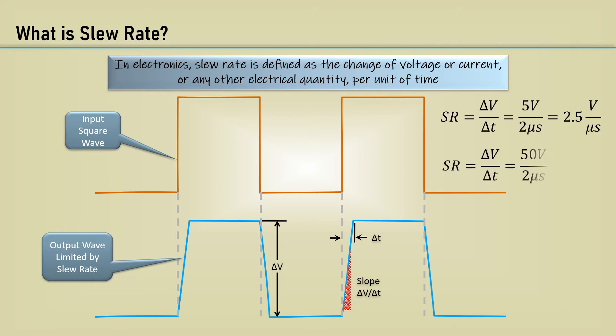If the voltage change was 50 volts in the same two microseconds, the slew rate would be 25 volts per microsecond. The change in time is the same. It's important to make this distinction between rise time and slew rate.